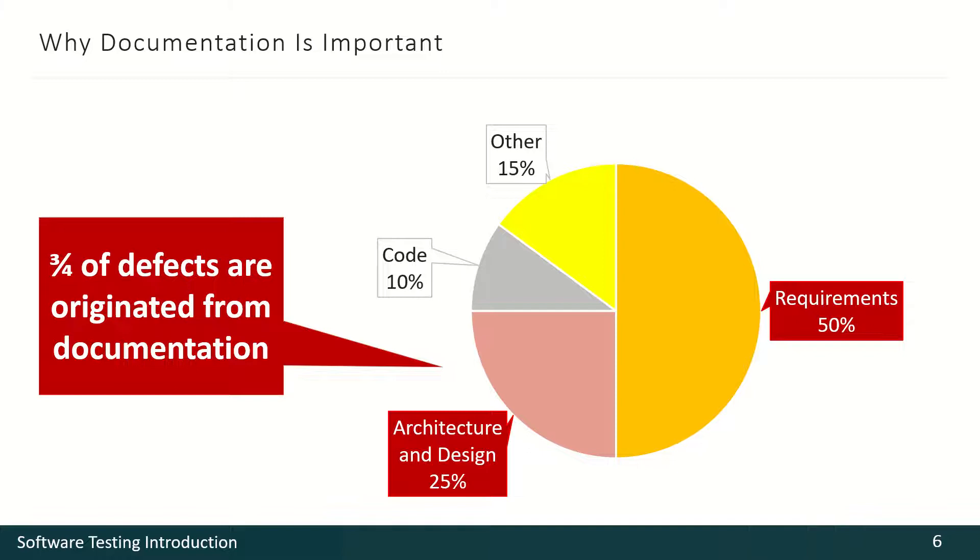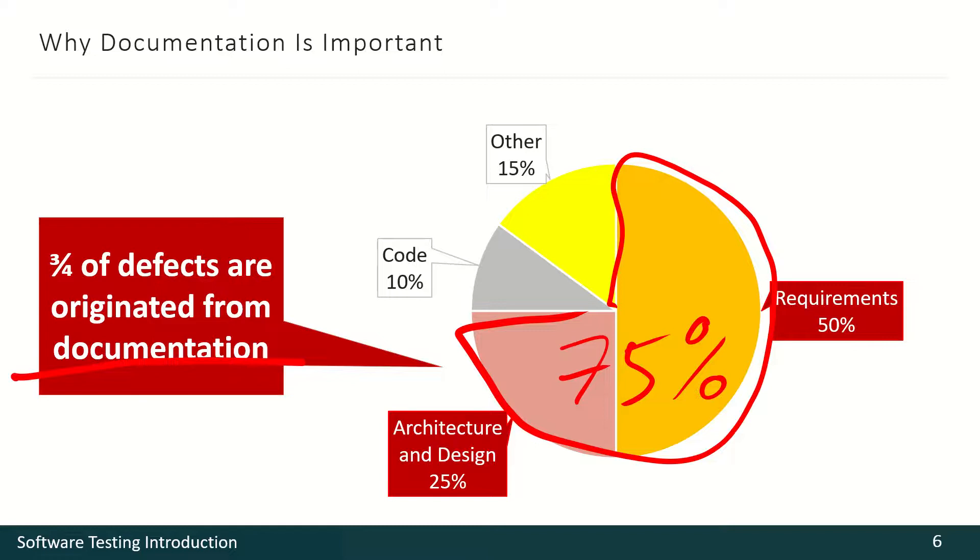So that's why documentation is so important. And the last picture here. As we can see, 75% according to the statistics, 75% of all troubles in IT projects are originated from documentation. So if we work with documentation well, if we fix all the troubles in documentation, we can eliminate not all that 75%, but a lot of those 75% of troubles from our project. And now we shall talk in the next videos about instructions and techniques of working with requirements more in details.